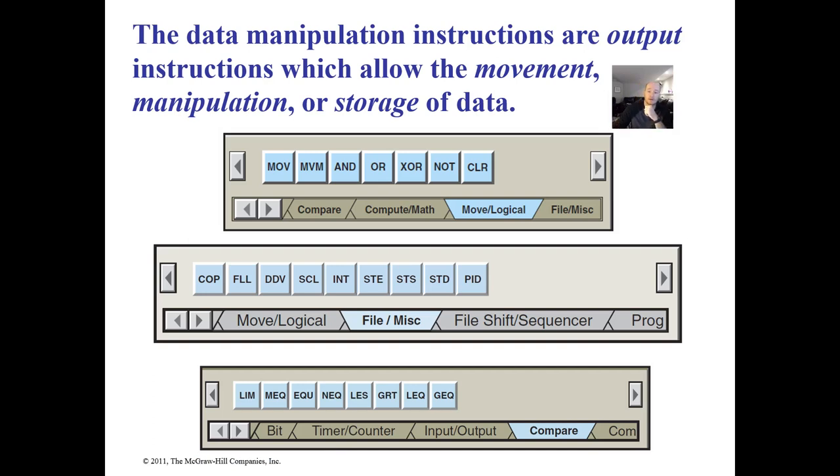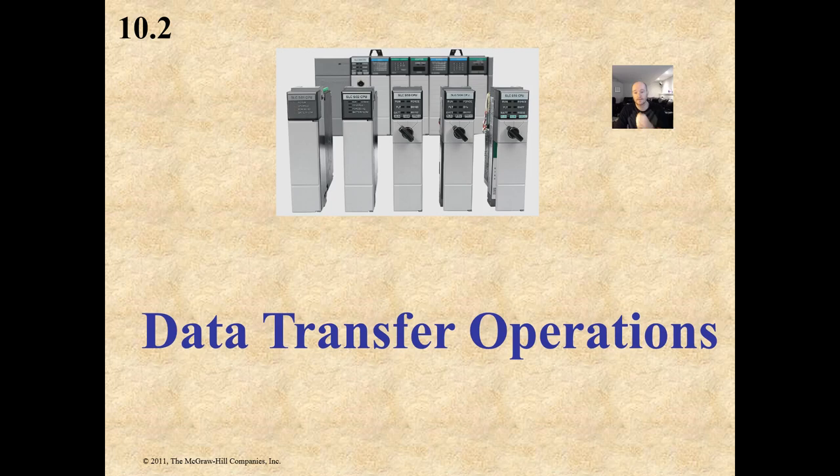Now there's a couple things here that I want to focus on. These are all located in the move logic bin. We have the move, the mass move, which is what we're going to be focusing on today. For our file, this is located in our file in miscellaneous. And then our compare instructions, which will be on the next lecture, these are inputs. These are inputs and these aren't really data. These are manipulating outputs that are already associated with something. We're not changing or moving outputs themselves. We're just using those words to make logical decisions.